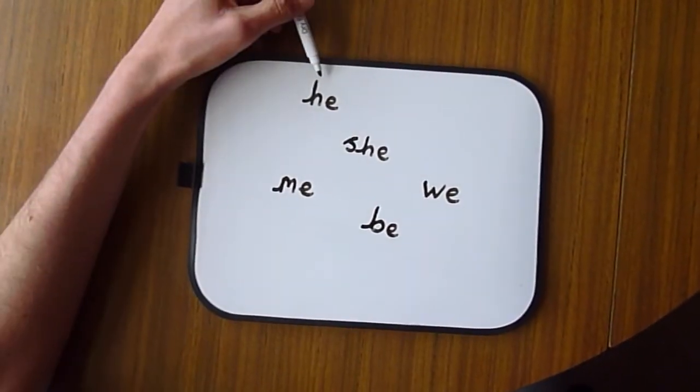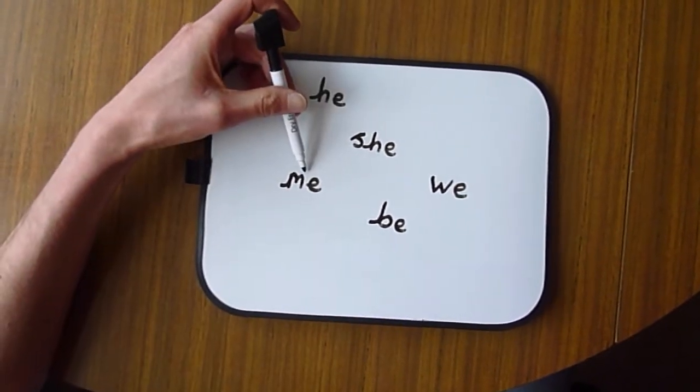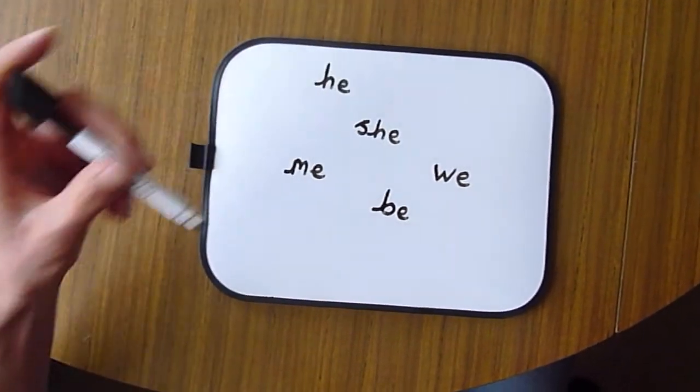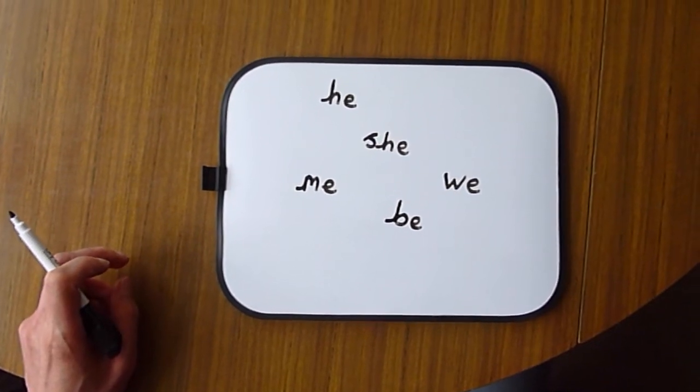Okay, so let's have a look at these five keywords. We've got he, she, me, be, and we. Why don't you have a practice of those keywords on your whiteboard or your piece of paper.